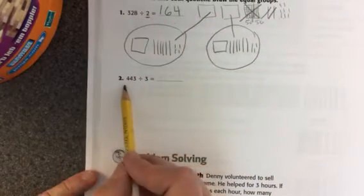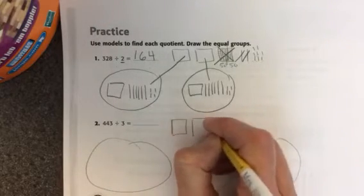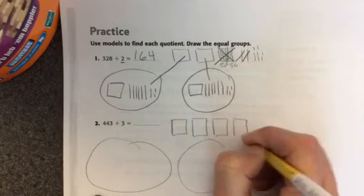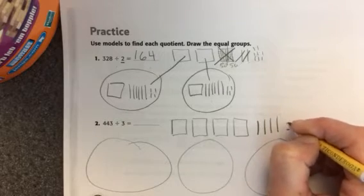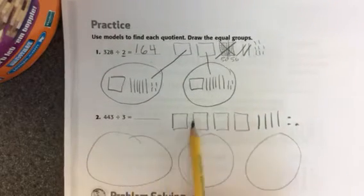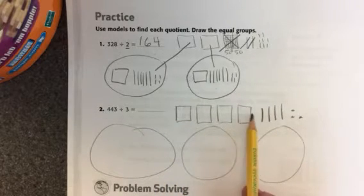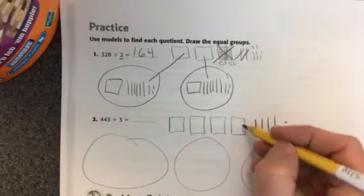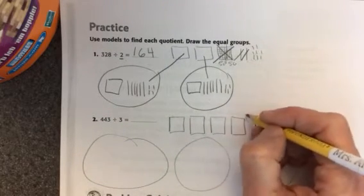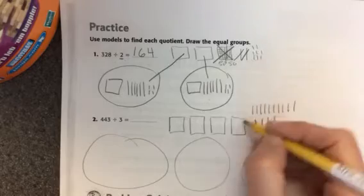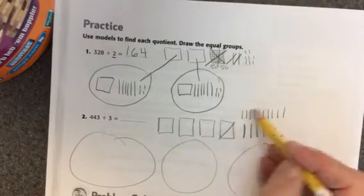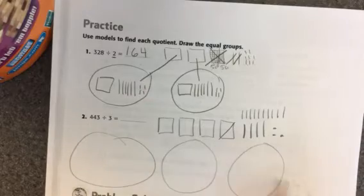Now you're going to do this one. Here we have 443 divided by 3. So I'll need three groups, and then I'll put 443 right here. Here's four hundreds, and 40, and 3. Now I'll need to put one in each group. I'll have one left over, so I'm going to turn it into 10s. So I could go like this: 2, 3, 4, 5, 7, 8, 9, 10. And that will represent that one. And then I can divide them up. So you'll go ahead and do that.